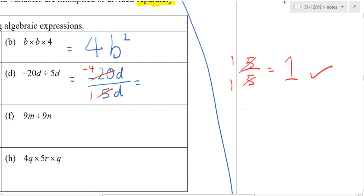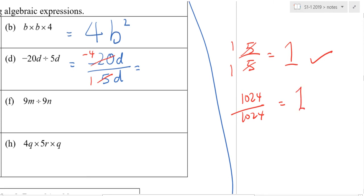What happens when I have 1024 divided by 1024? What's your answer? 1. What happens when I have D over D? What's the answer?